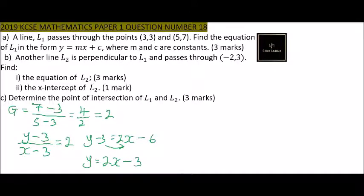Part B: line L2 is perpendicular to L1 and passes through (-2, 3). Find the equation of L2. If the line is perpendicular to L1, then its gradient equals -½, because the gradients of two perpendicular lines multiply to give -1. So -½ times 2 equals -1.